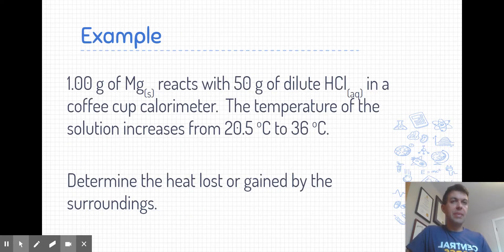Let's now look at an example here. Here's a common reaction, where we have one gram of magnesium reacting with 50 grams of dilute hydrochloric acid in a coffee cup calorimeter. As a result of the reaction, the temperature of the solution increases from 20.5 to 36 degrees Celsius. We want to determine the heat that's lost or gained by the surroundings. So our first step in any sort of mathematical problem is to identify the givens that we have in this question.